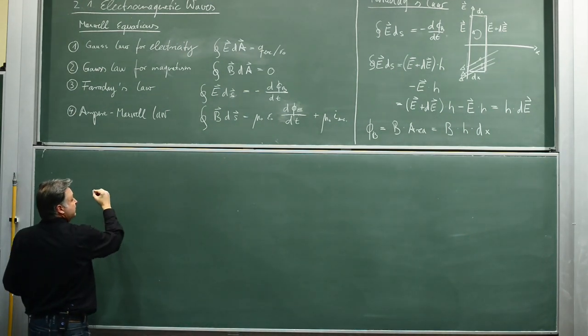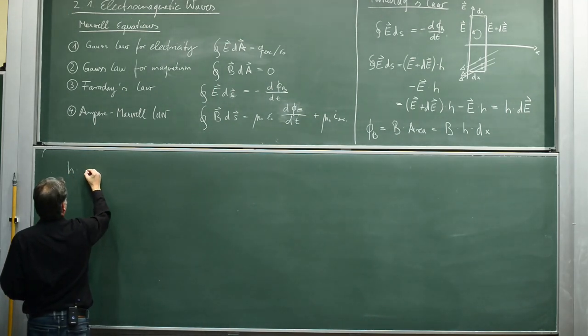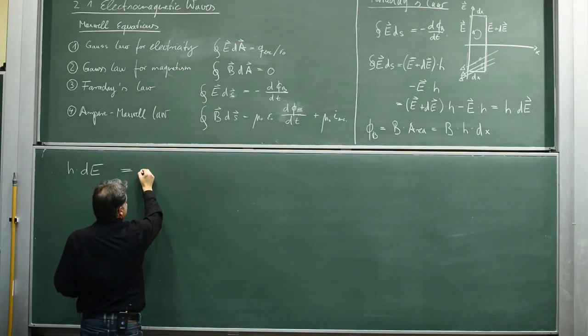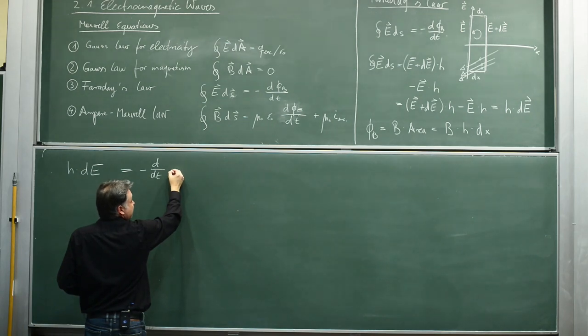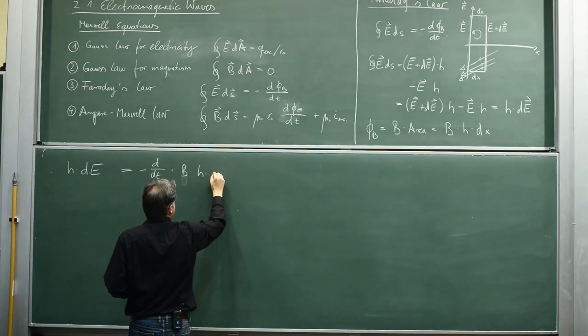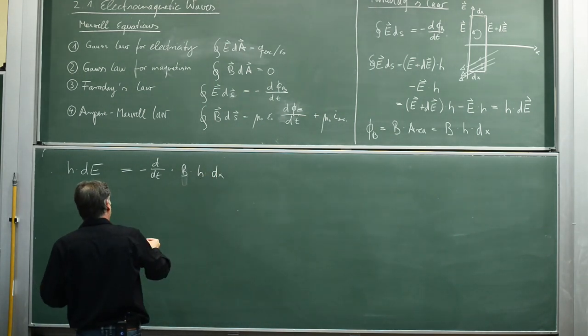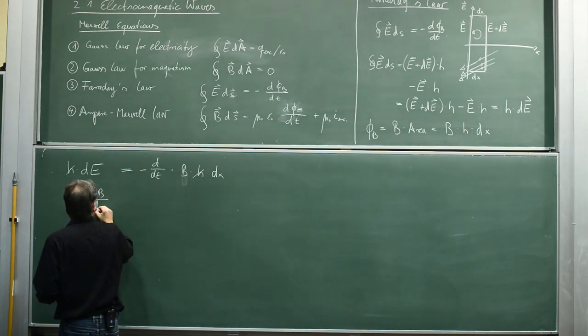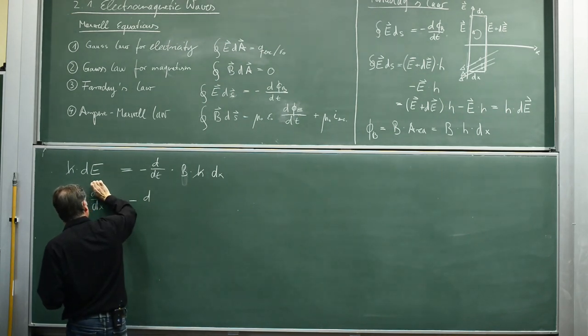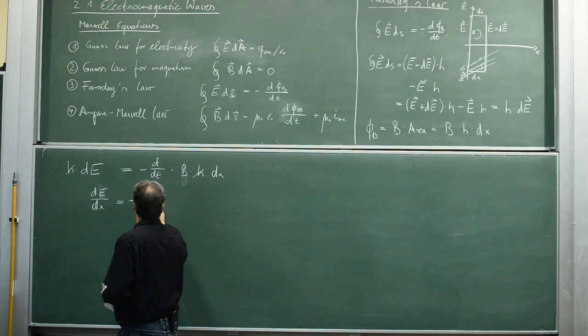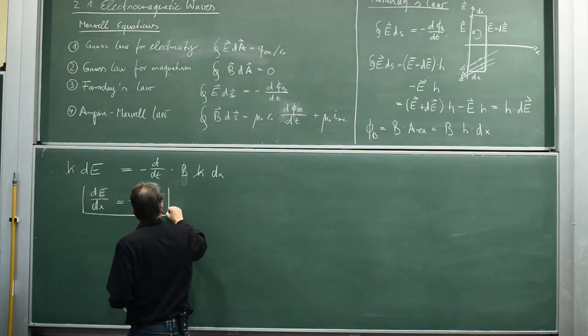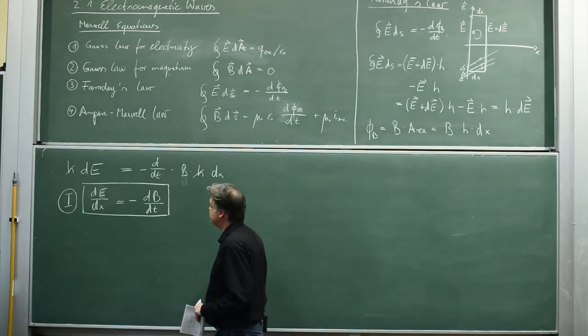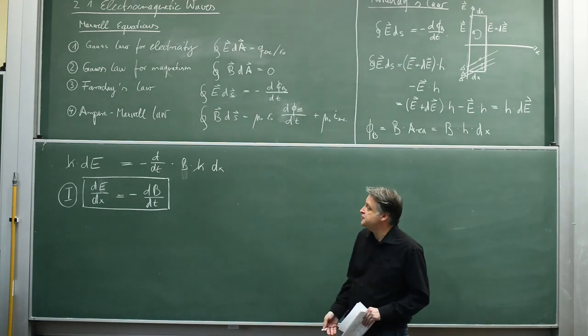For the line integral we got h times dE. For the time derivative of the magnetic flux lines we get minus d by dt times B field times h times dx. If we summarize that, h cancels out and we get dE by dx equals minus dB by dt. This was our first equation from the Faraday's law.